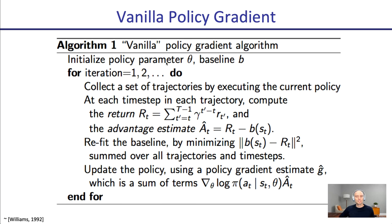Here's the vanilla policy gradient algorithm, the baseline system we'll start from in this lecture. We initialize our policy by choosing some parameter vector theta. Our baseline is very often also a neural network, and it often represents the value function. In each iteration, we run our current policy to collect a set of trajectories. Then at each time step in each trajectory, we compute the return from that time onwards. We compute an advantage estimate, which is the difference between the return from that time onwards and our baseline — the value function estimate.